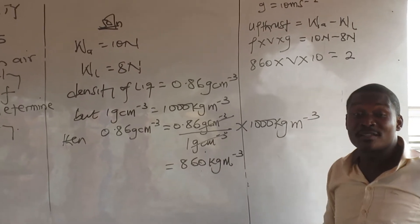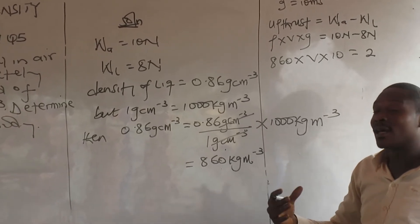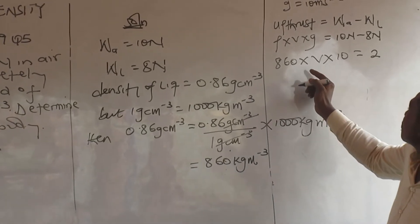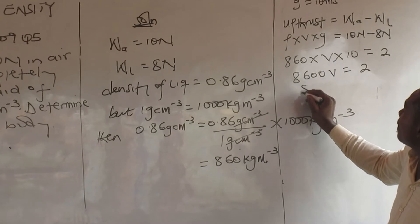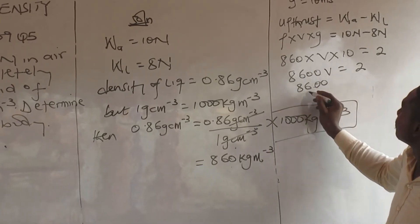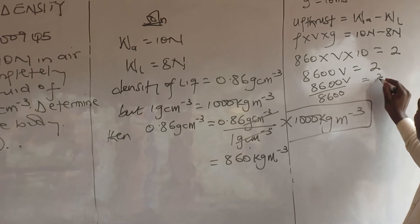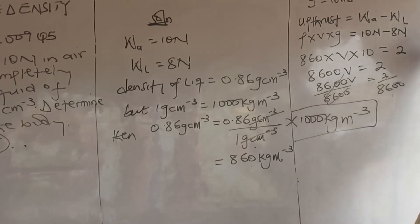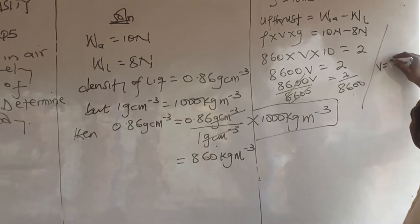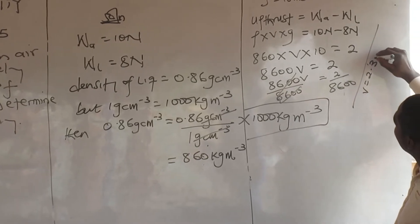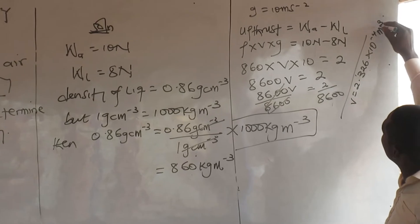Different density questions vary, so you have to go through all types to become acquainted before you can solve them confidently. Dividing both sides by 8600, we get V equals 2 divided by 8600, which gives a volume of 2.326 times 10 raised to the power of negative 4 cubic meters. That is the volume of the body.